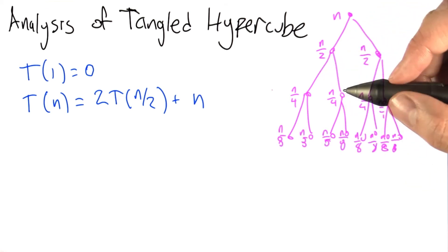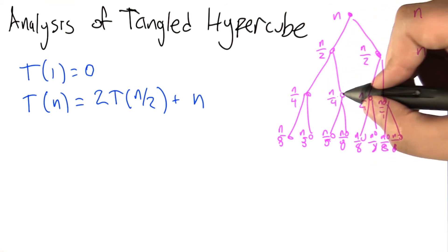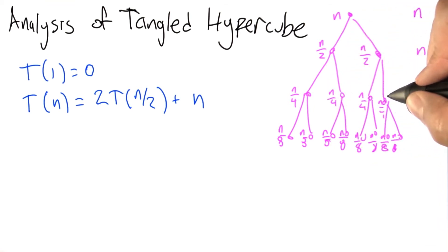At each of these levels, we're going to be generating n new edges at this top level. n over 2 for this subgraph and n over 2 for this subgraph, which adds up to n. n over 4 for this one, n over 4 for this one, n over 4 for this one, and n over 4 for this one, which adds up to n.